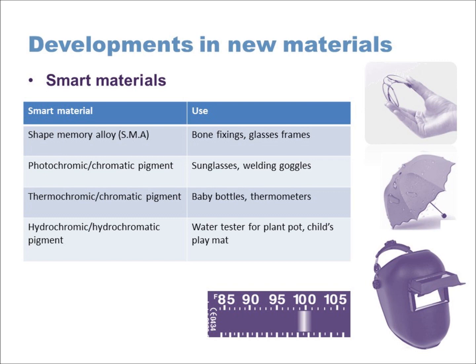Another smart material is thermochromic or thermochromatic pigment, which can also be applied to a polymer strip. You've probably encountered this in forehead thermometers — the strip changes color to indicate your body temperature. There are many other applications, often linked to safety: baby bottles that show when the liquid is a suitable temperature for a baby to drink, plugs that indicate bath water temperature, and fun products like t-shirts that change color based on body heat.